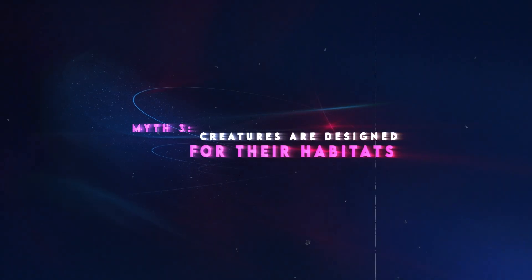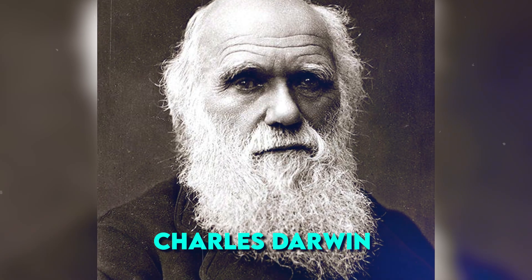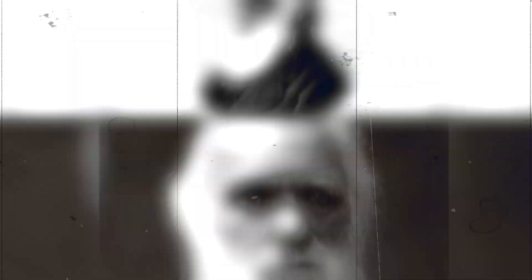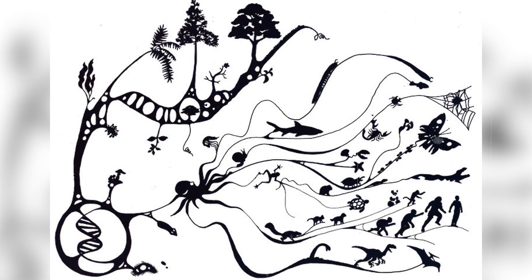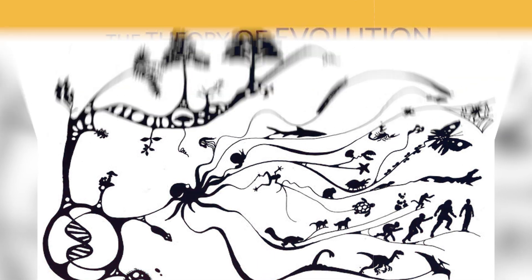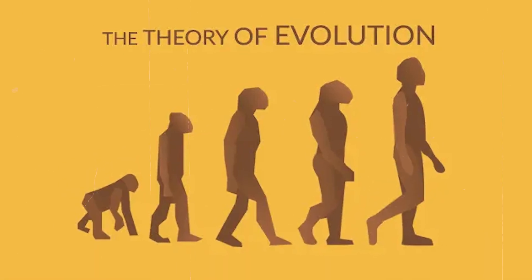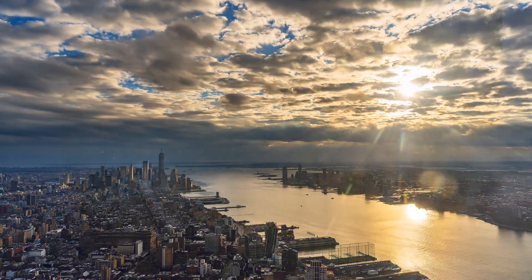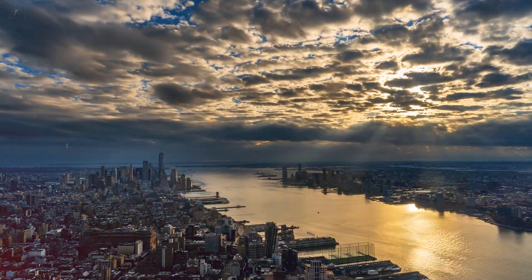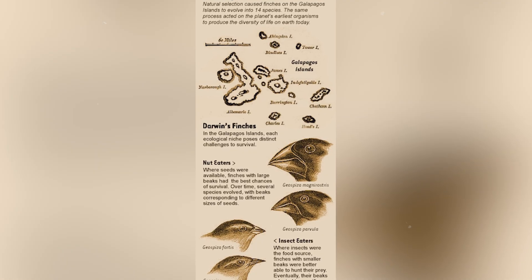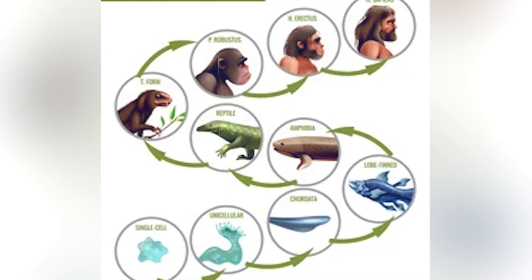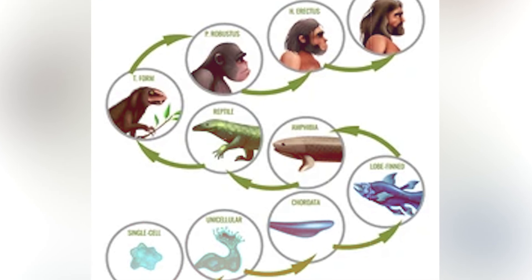Myth 3. Creatures are designed for their habitats. Natural selection, proposed by Charles Darwin in the 19th century, offered a compelling explanation for the diversity of life. According to Darwin, random mutations in an organism's DNA produce variations. Some variations provide advantages, such as better camouflage or faster running speed, in their environment. These advantageous traits increase an organism's chances of surviving and reproducing, passing on their genes to the next generation.